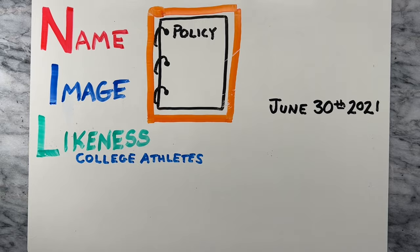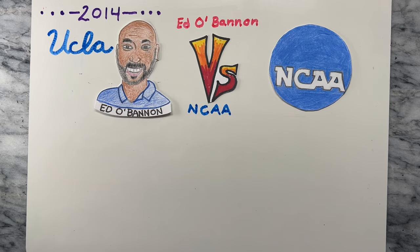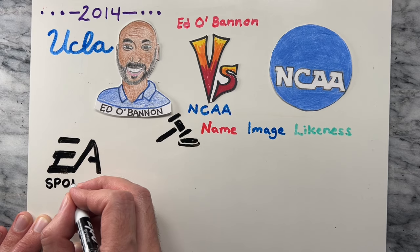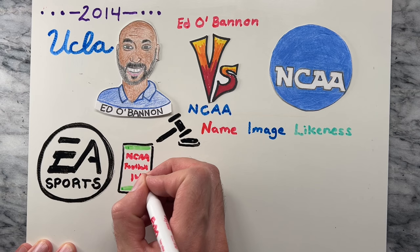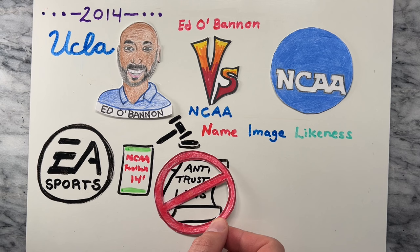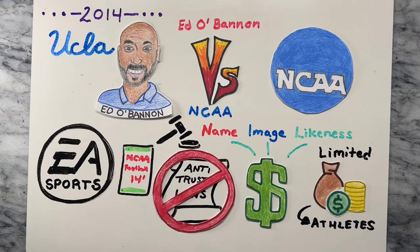The precursor to NIL was in 2014, when former UCLA basketball player Ed O'Bannon took a stand against the NCAA. The Ed O'Bannon vs. NCAA case was a landmark legal battle that challenged the NCAA's use of college athletes' names, images, and likenesses without compensation, specifically through the EA Sports NCAA football video game, in which athletes' names and images were used without compensation. Ed O'Bannon argued that the NCAA violated antitrust laws by prohibiting athletes from profiting from their own NIL. The case resulted in a settlement that allowed for limited compensation to college athletes for the use of their NIL.